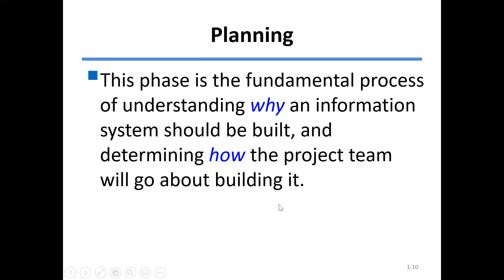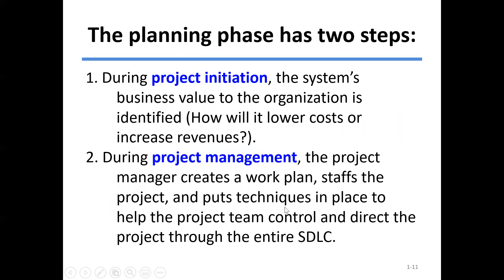The planning phase has two steps. First, project initiation identifies the system's business value to the organization — how it will lower costs or increase revenues — which is similar to feasibility analysis. Second, project management involves the project manager creating a work plan, staffing the project, and putting techniques in place to control and direct the project team throughout the software development life cycle.